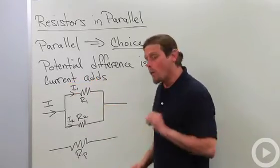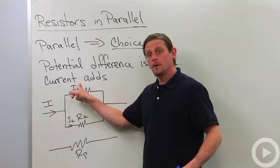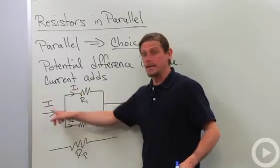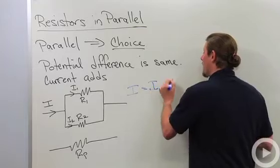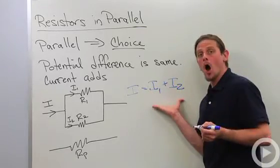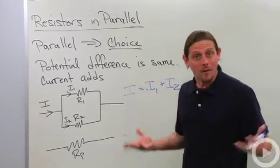The current is going to add, so what we would say here is that i1 plus i2 is equal to the total current i.